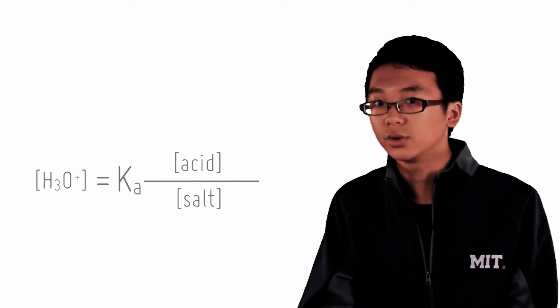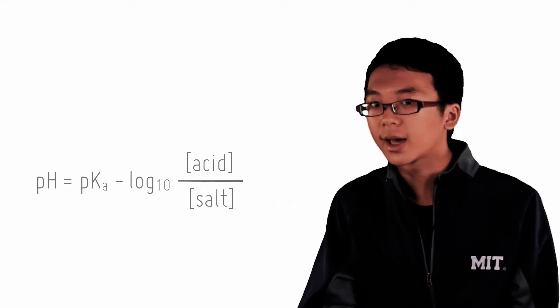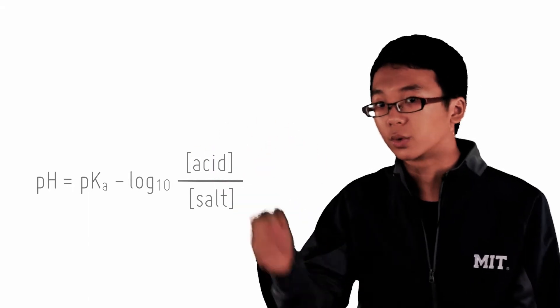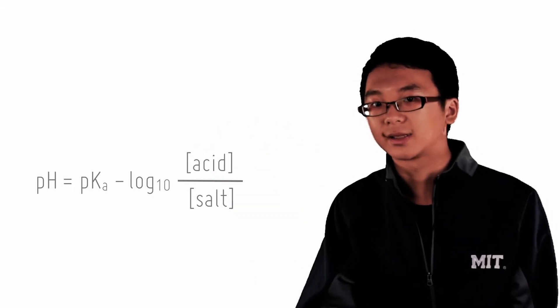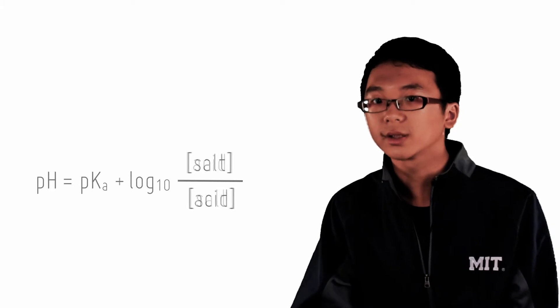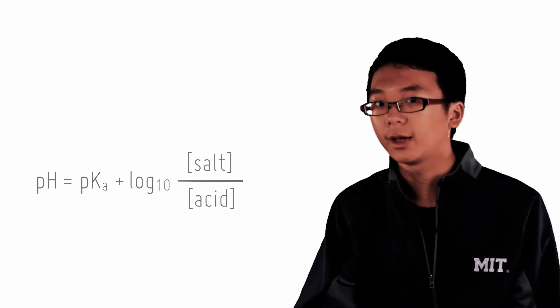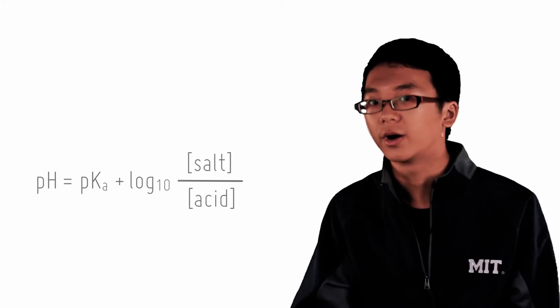Now this equation may not seem very useful. But let's take the p of both sides. This gives us pH equals pKa minus log acid over salt. Let's make all of the terms positive. So pH equals pKa plus log salt over acid.